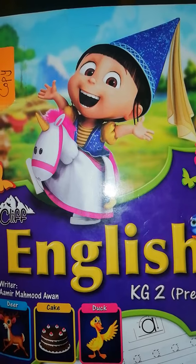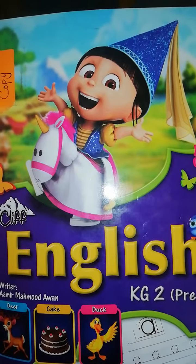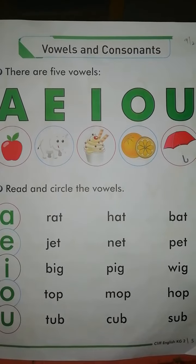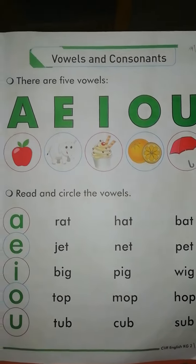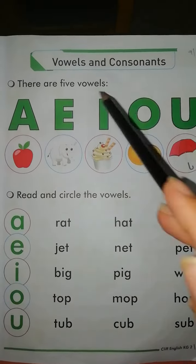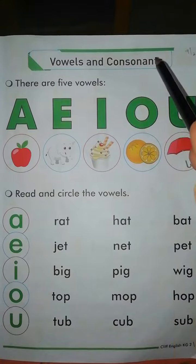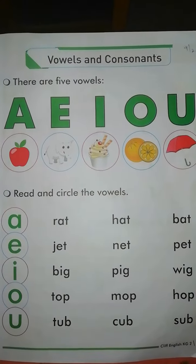Today we will learn Cliff English. Open page number 5: Vowels and Consonants.